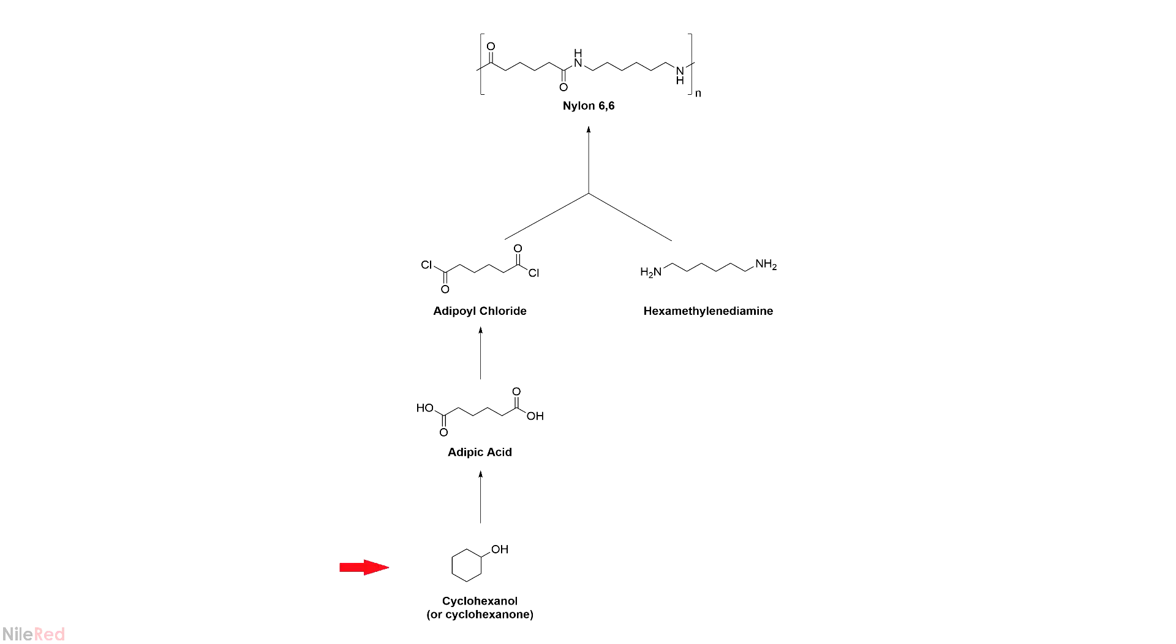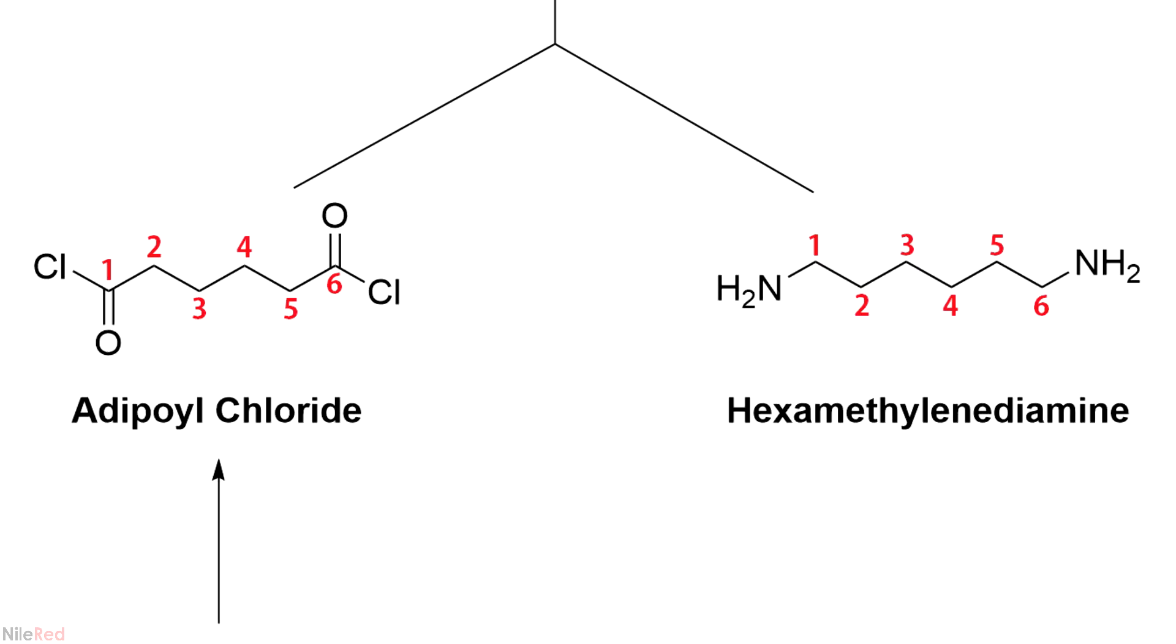Which is the typical industrial route to nylon 6-6. On the left side, it starts with cyclohexanol, which is converted to adipic acid and then to adipoyl chloride. The adipoyl chloride is then reacted with hexamethylenediamine to form the final nylon 6-6. The reason why we call it nylon 6-6 is because each of the precursors both have six carbons in them.